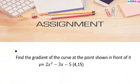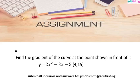So thank you very much for listening. But you have to try with a very short assignment here. It says find the gradient of the curve at the point shown in front of it. So we have y equals 2x square minus 3x minus 5. Thank you. And then God bless. Stay safe.